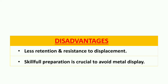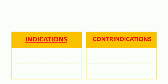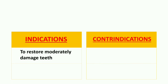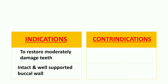Indications for partial coverage restorations: first is to restore a moderately damaged tooth — if the tooth is not extensively damaged, we can give a partial coverage retainer. Second is intact and well-supported buccal wall, because the buccal or facial wall must be left unprepared and therefore should be in good condition.